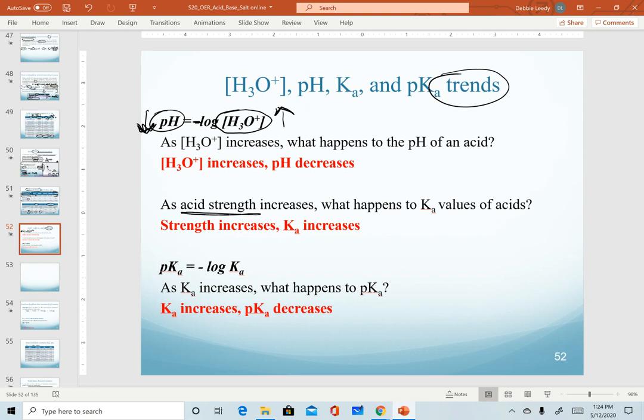As we change the strength of an acid. So if I increase the strength of an acid, a stronger acid, we want to know what is going to happen to Ka values. And those should increase. So as we get stronger and stronger acids, we get larger and larger K values.